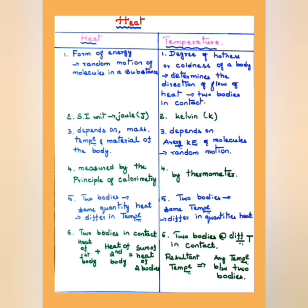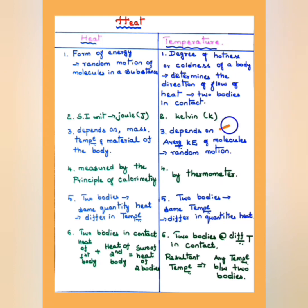The SI unit of heat is joule, represented by capital letter J. The SI unit of temperature is kelvin, K. Heat depends on the mass of the body, the temperature of the body, and the material of the body. Temperature depends on the average kinetic energy of the molecules in random motion.